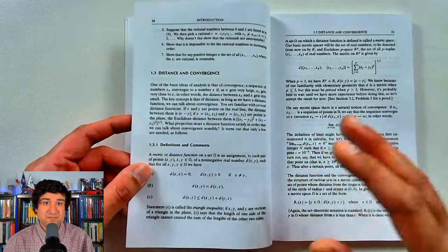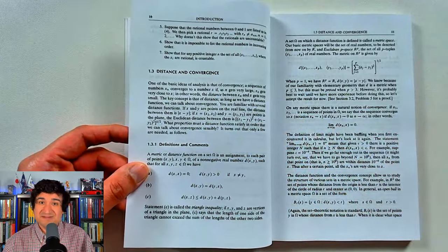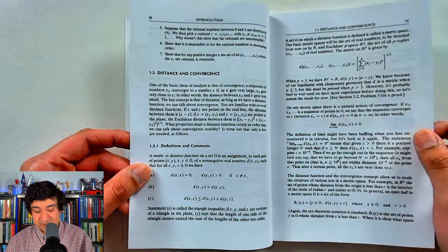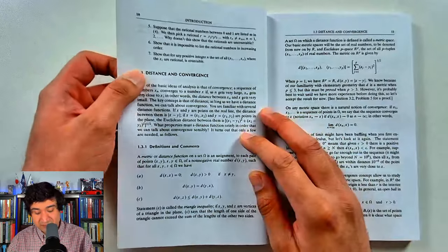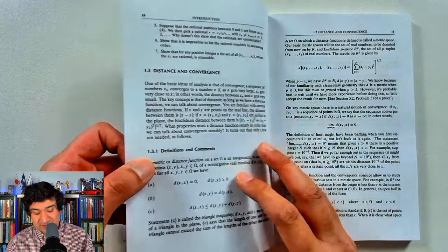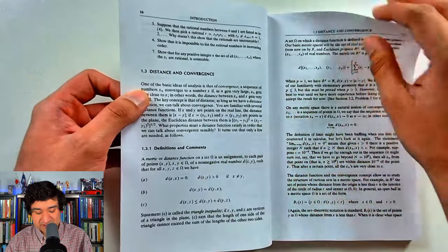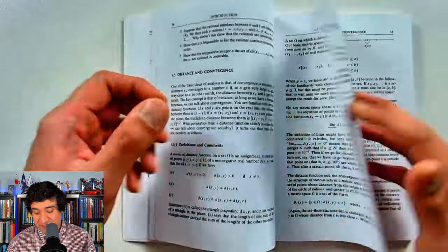Sections are relatively short. I like that kind of stuff. I really hate when you have to travel 100 pages in a book to get to the problem sets. Got 1.3 distance and convergence, so already on page 10 talking about distance and metric. That's what I like to see.